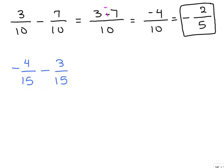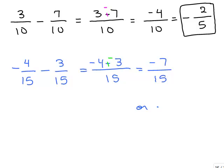Here's one for you to try: negative 4 fifteenths minus 3 fifteenths. Put the video on pause and try that on your own. We have a common denominator, so we compute negative 4 minus 3 in the numerator. Changing that to negative 4 plus negative 3 gives negative 7, so the answer is negative 7 fifteenths. You can keep the negative 7 in the numerator or write it with a minus sign out in front.